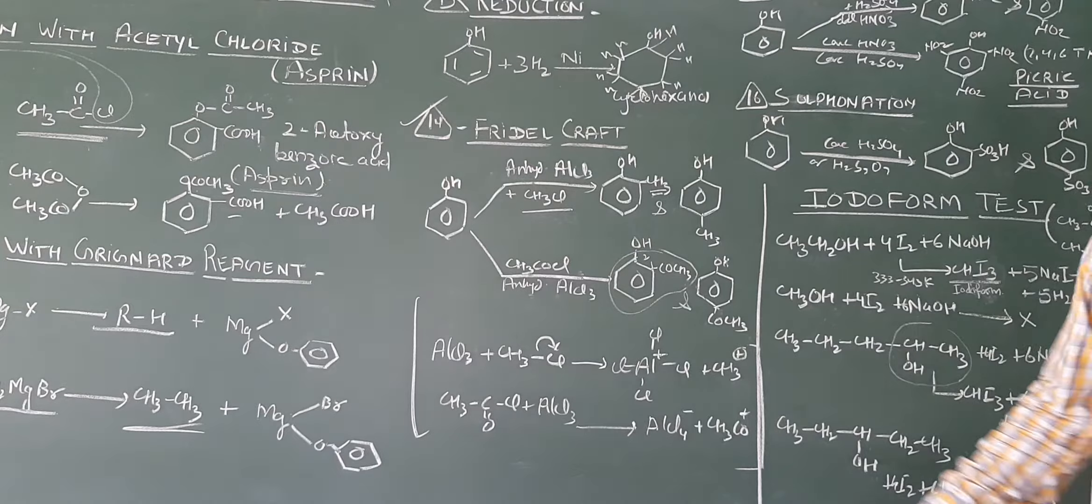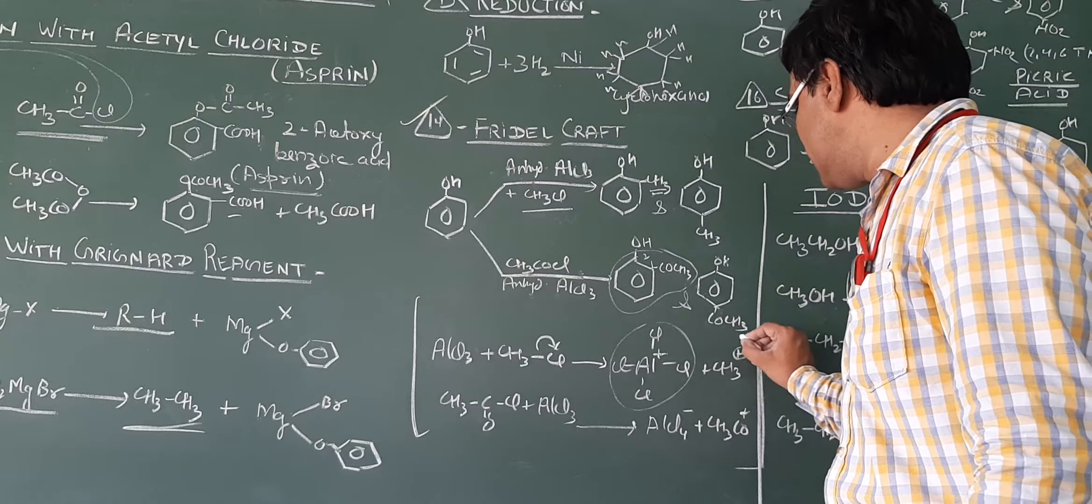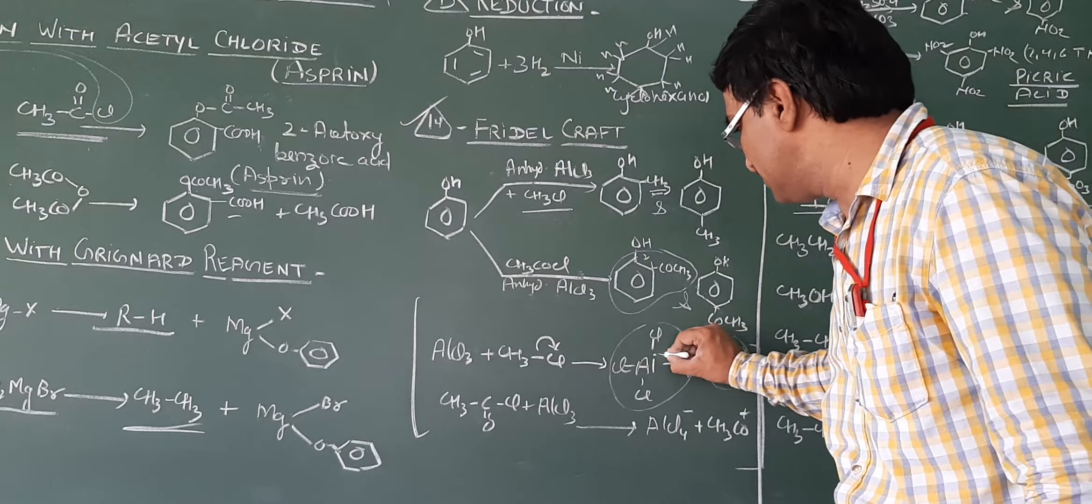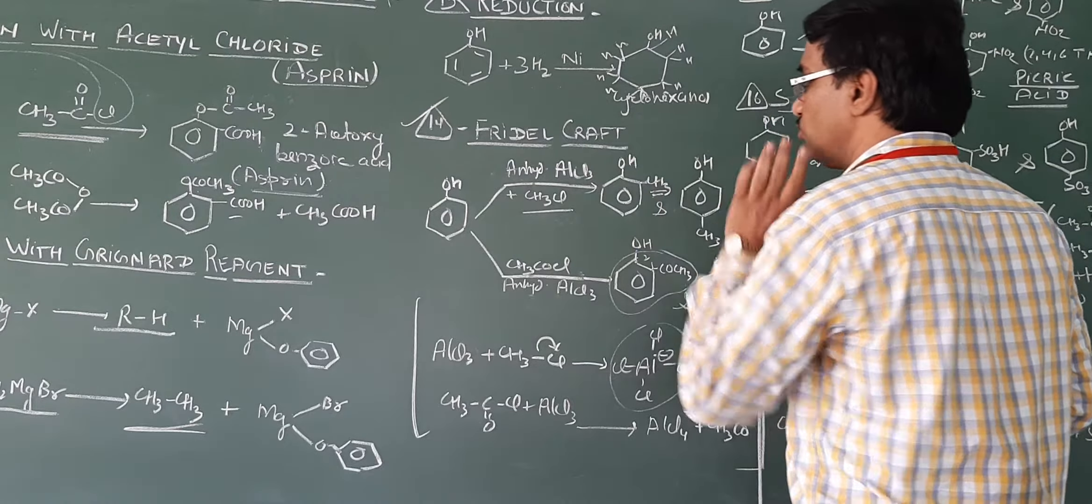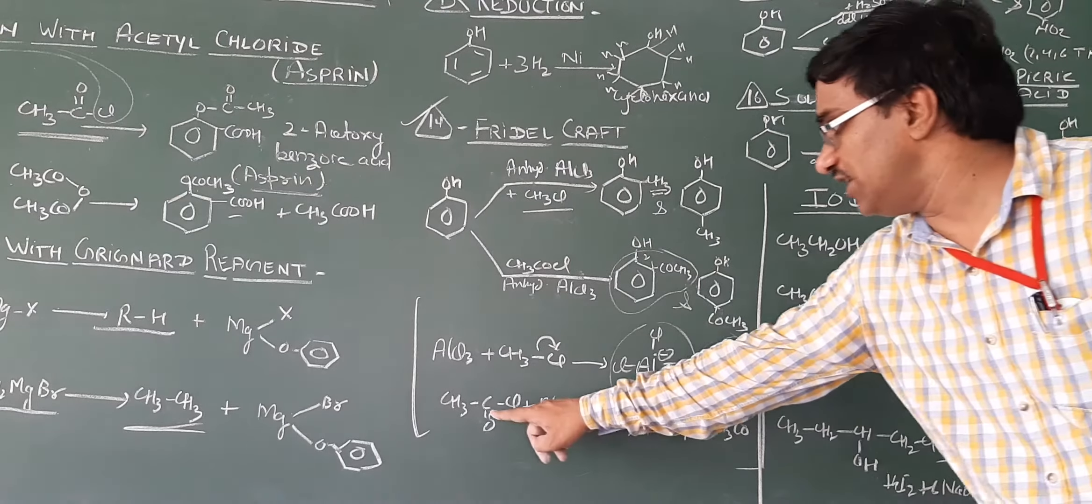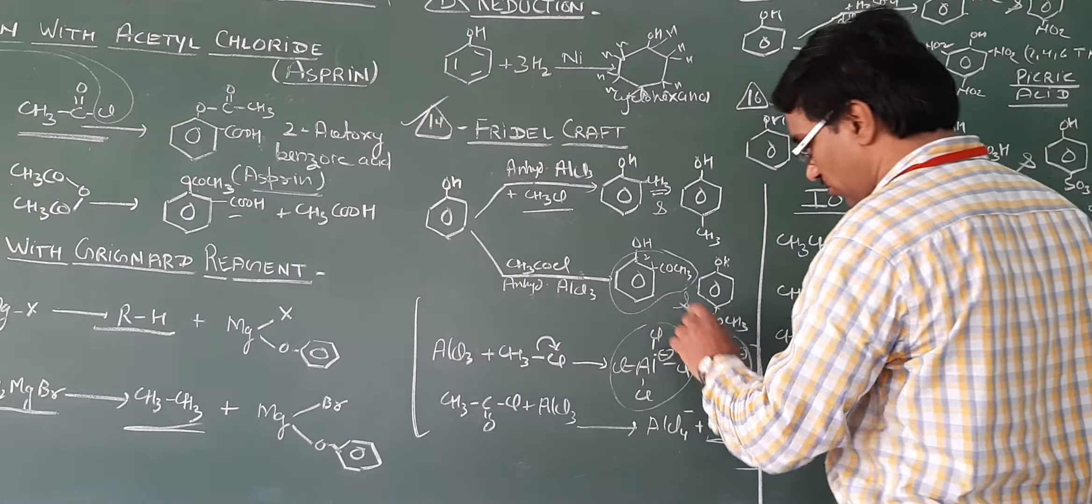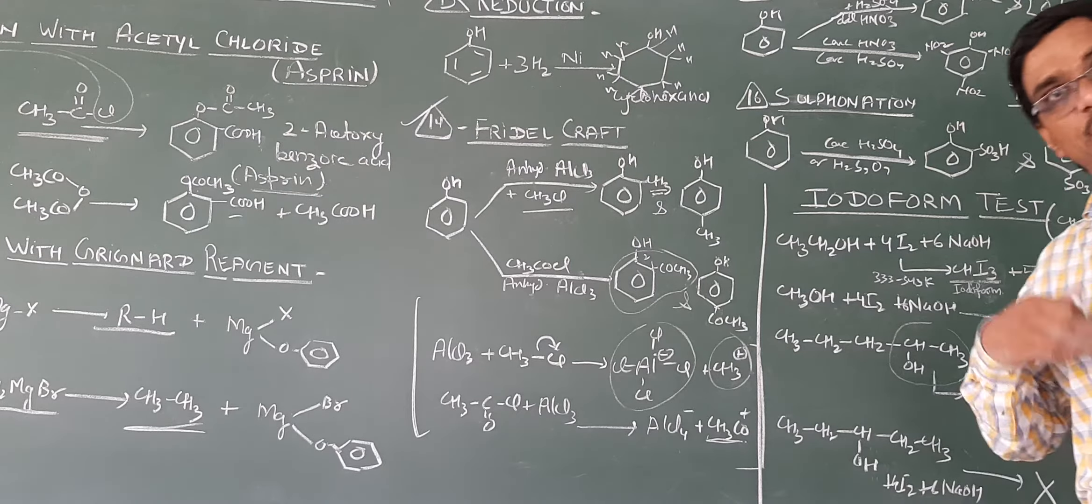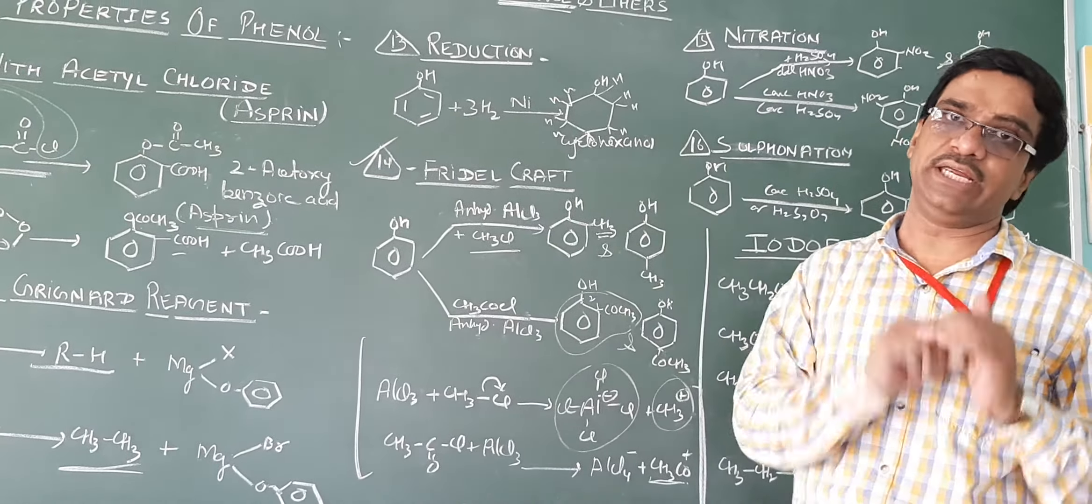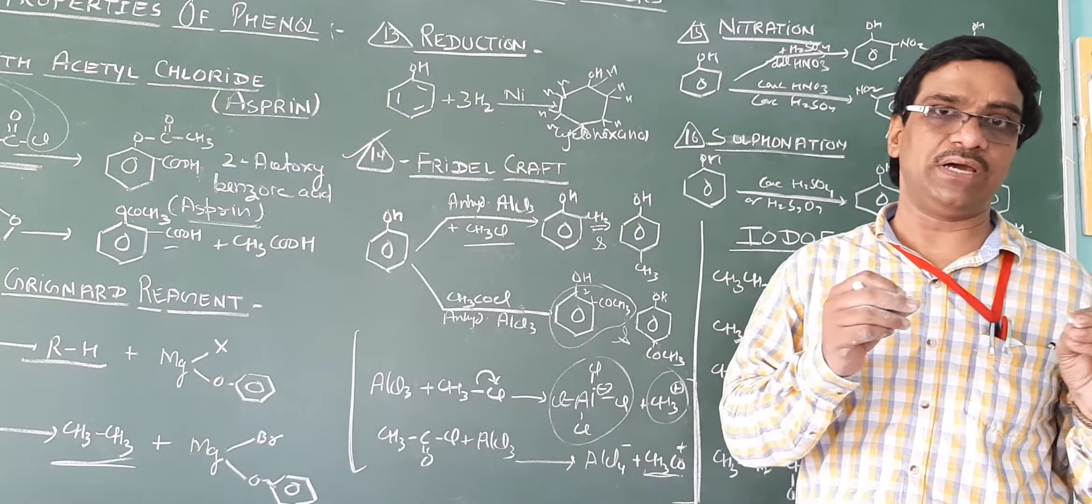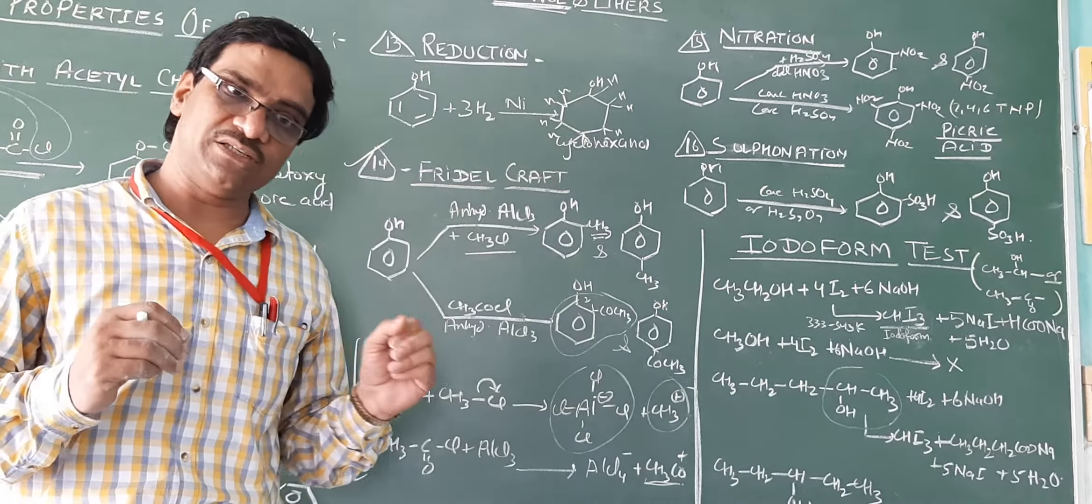As a reaction, AlCl3 with CH3Cl gives AlCl4 minus and CH3 positive. This CH3 positive is an electrophile. AlCl3 and CH3CO attack by nucleophile. Nucleophile attack by benzene ring. Why ortho-para direction? Because the electron density is at ortho and para positions. I will tell you about the resonance structure.